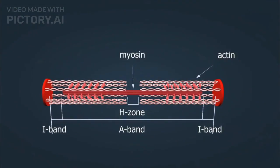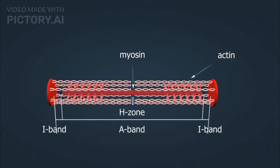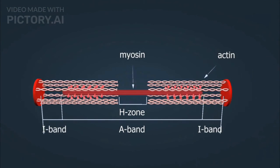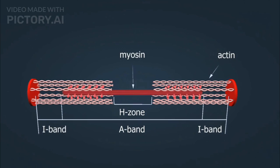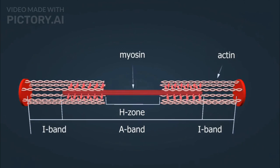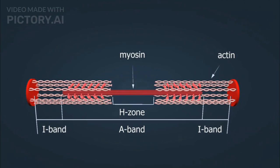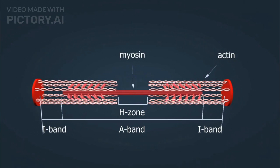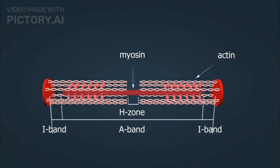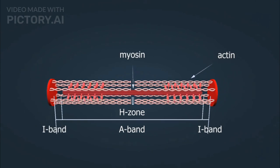Muscle fiber contraction is the activation of tension-generating sites within muscle cells, while relaxation refers to the return of muscle fibers to a low-tension state. This cycle of contraction and relaxation continuously repeats, enabling movement and locomotion.